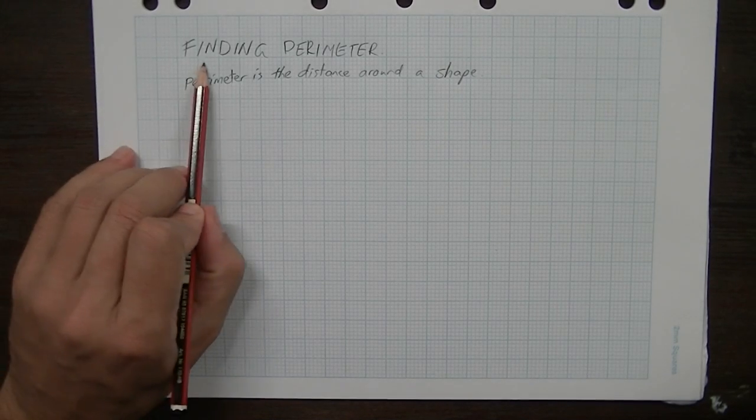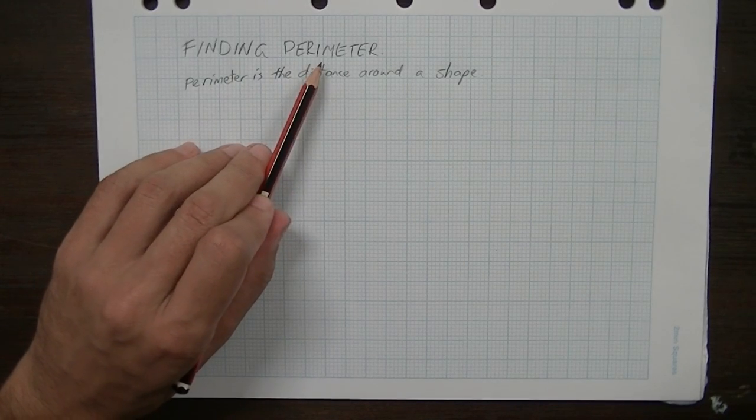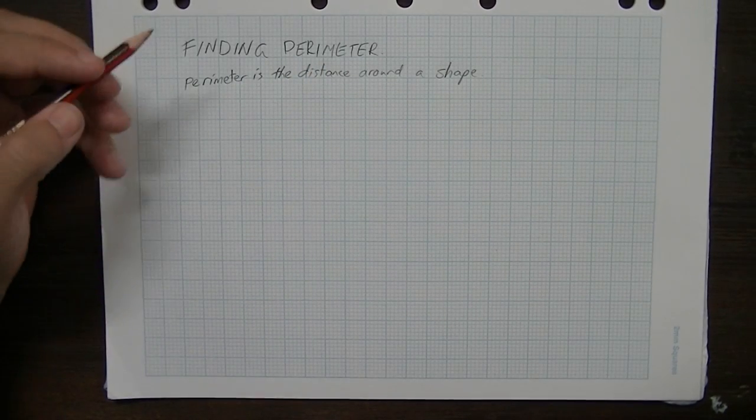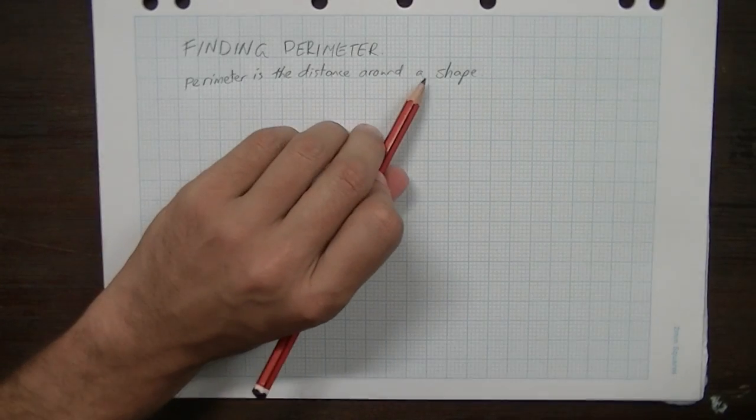Okay, so in this video we're going to be finding perimeter. Now before you can find perimeter, obviously you need to know what perimeter is. Most of you already know that. Perimeter is the distance around a shape.